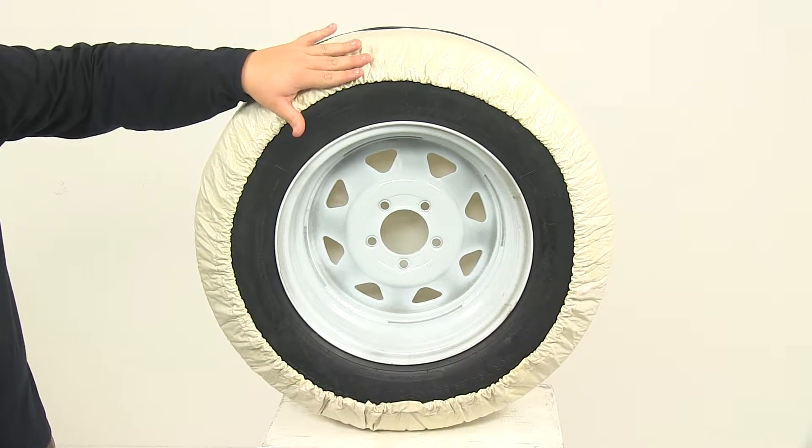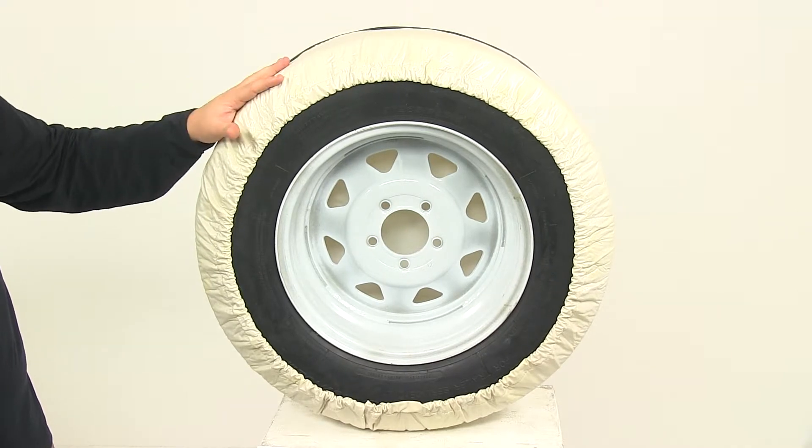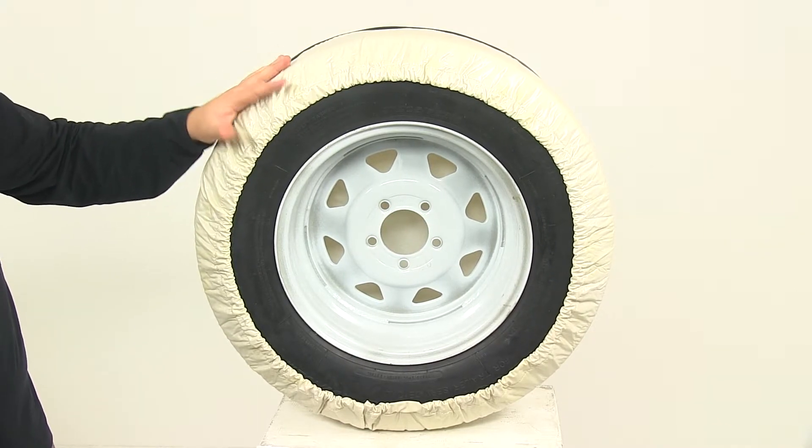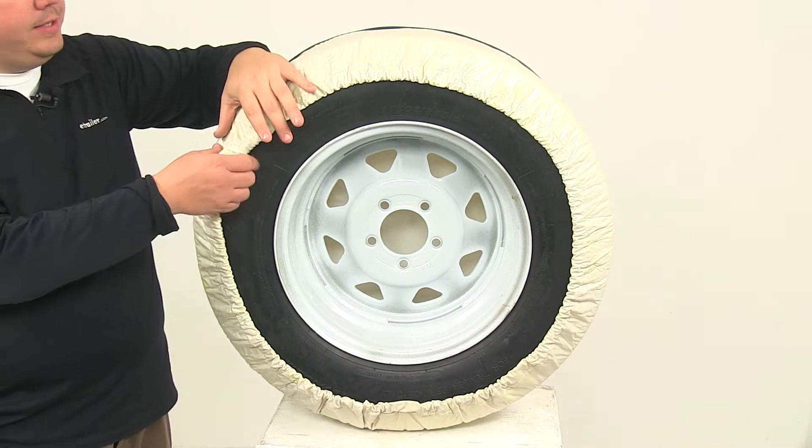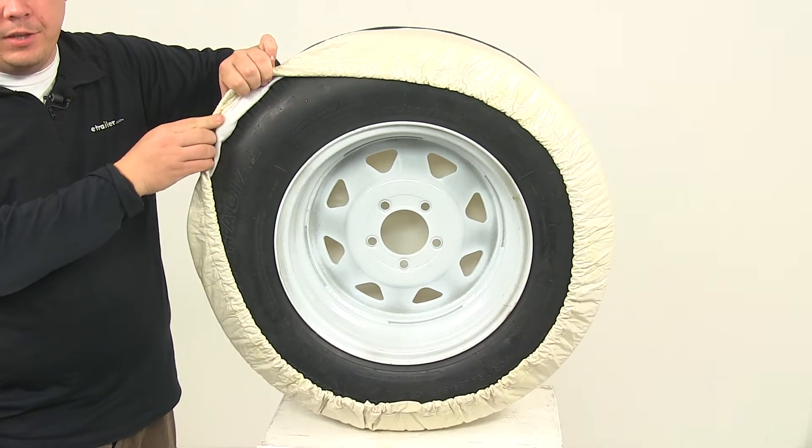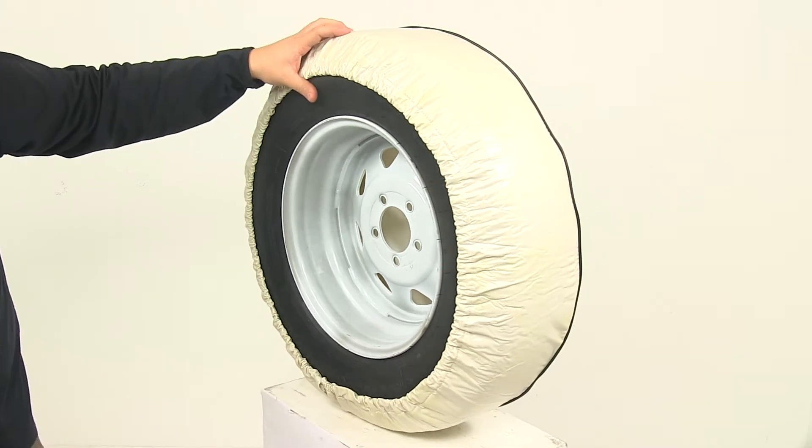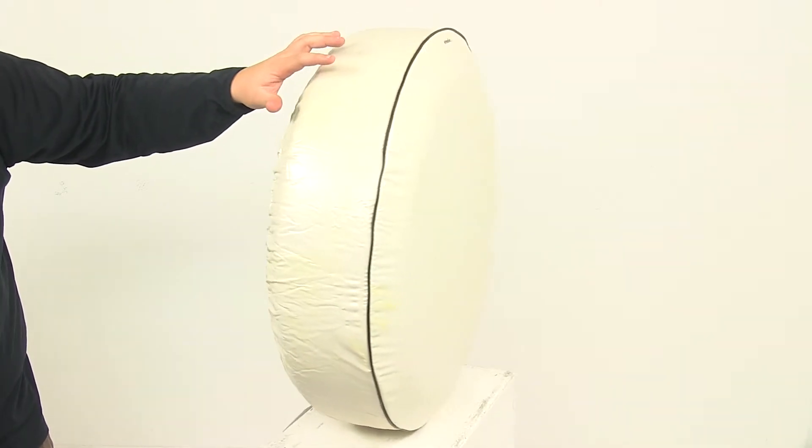So we have this elastic cord here on the back side that allows for an easy installation and ensures a snug fit. On the inside we're going to have a soft non-scratch lining. And this cover is designed to fit tires that have an outer diameter of around 28 inches.